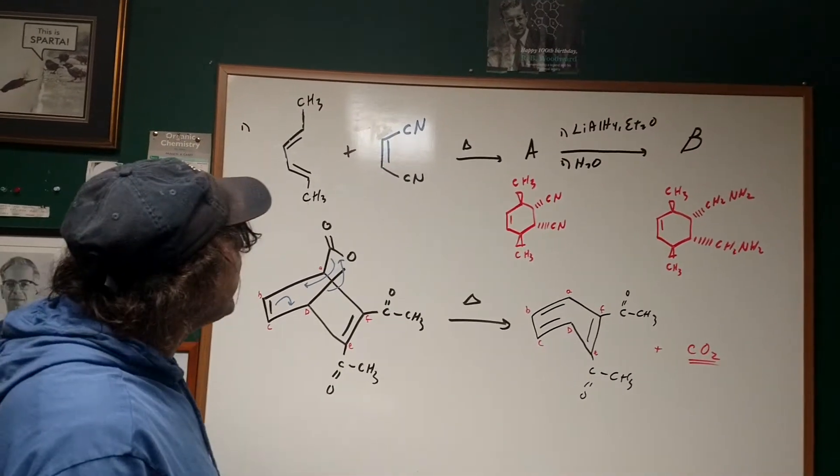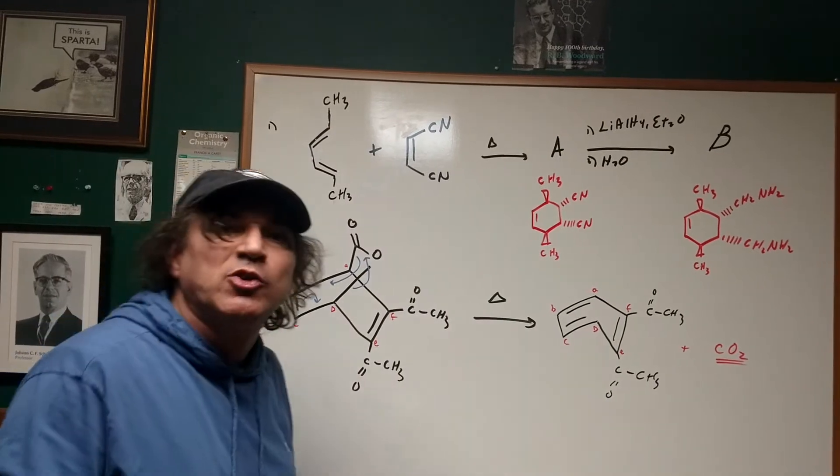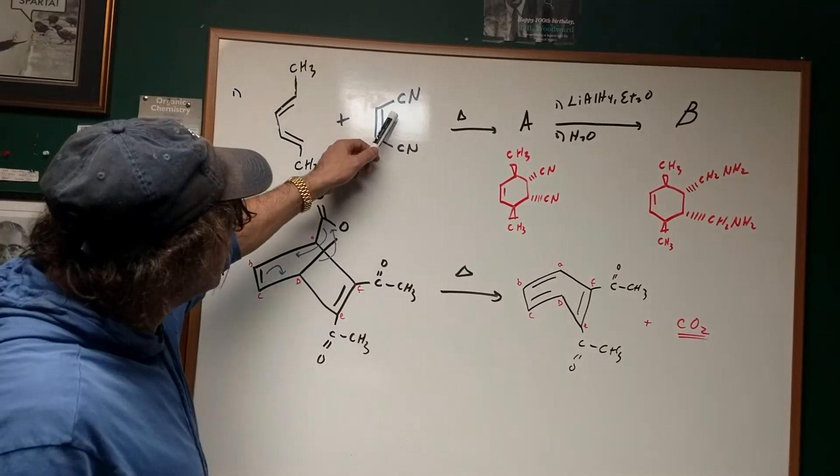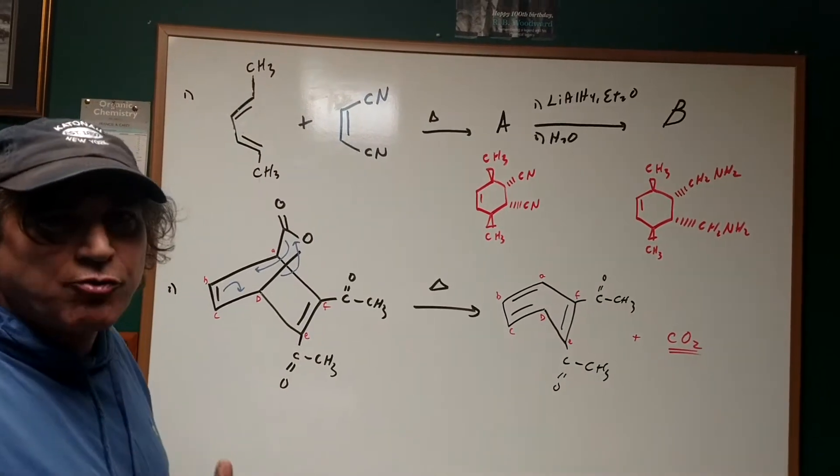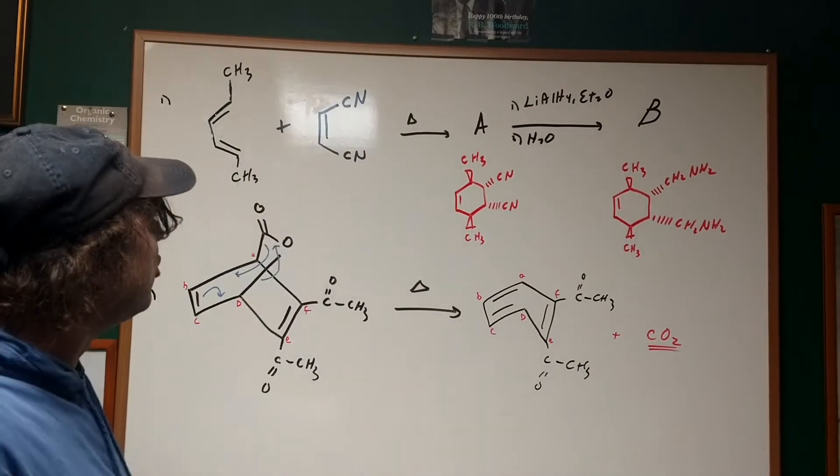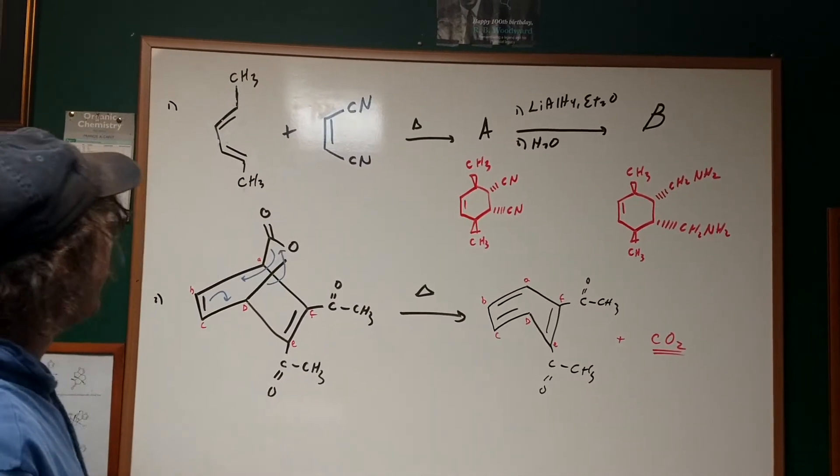Now, this reaction is highly stereospecific and this will be borne out in a few minutes. Notice that the dienophile prefers to have electron withdrawing groups to accelerate the reaction, and therefore we've got two good electron withdrawing groups.